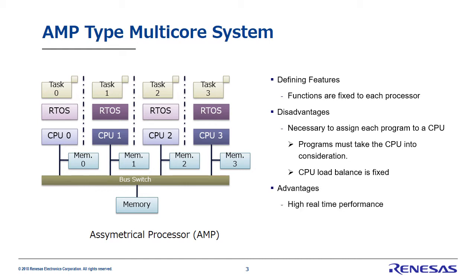An advantage, though, is that the real-time performance is high. The reason for this is there is no cache issue. Since software is fixed for each CPU, the cache can be eliminated. As a result, the issues that the cache causes with real-time performance are also eliminated. However, even with AMP types, if an MMU is used, the internal TLB can still miss, causing CPU stalling. So please keep that in mind.